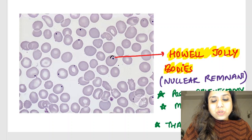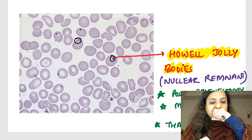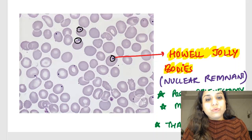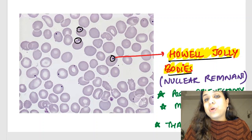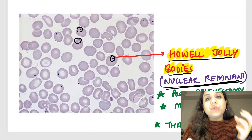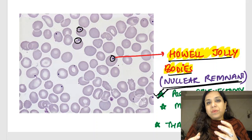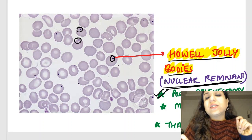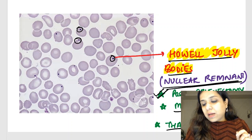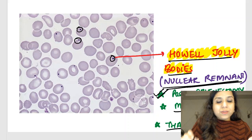This is an RBC with a bluish inclusion. These bodies which are seen are called Howell-Jolly bodies, and these are nuclear remnants — remnants of the nucleus. They are usually seen post-splenectomy: if you take out the spleen of a patient, you see these remnants of nucleus in the RBCs. They are also seen in megaloblastic anemia and thalassemia.